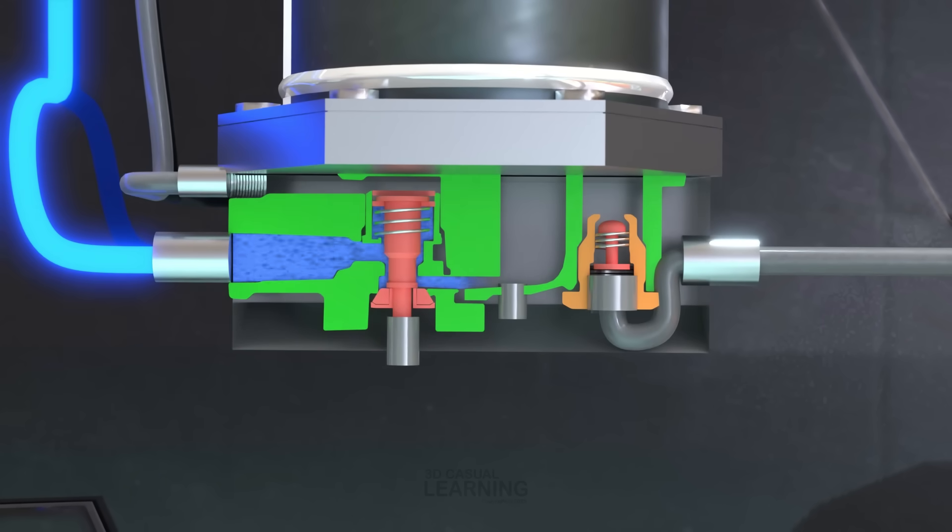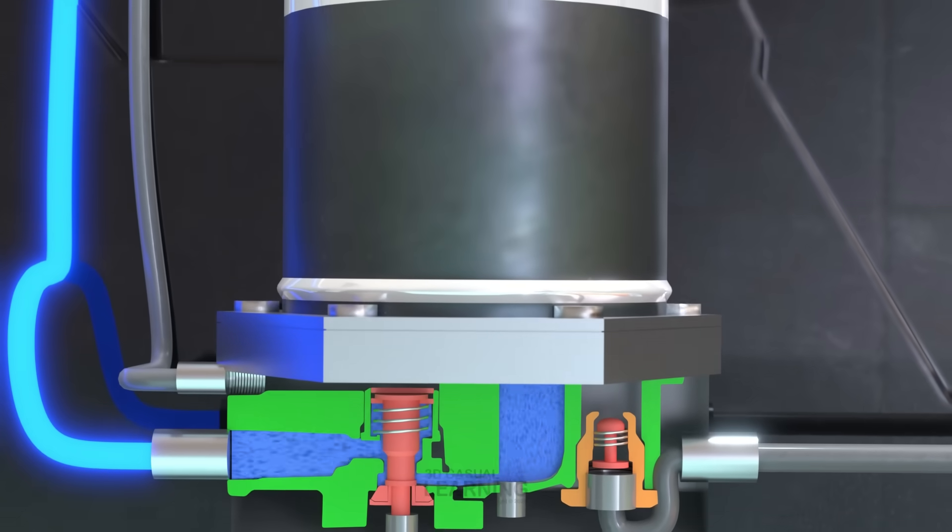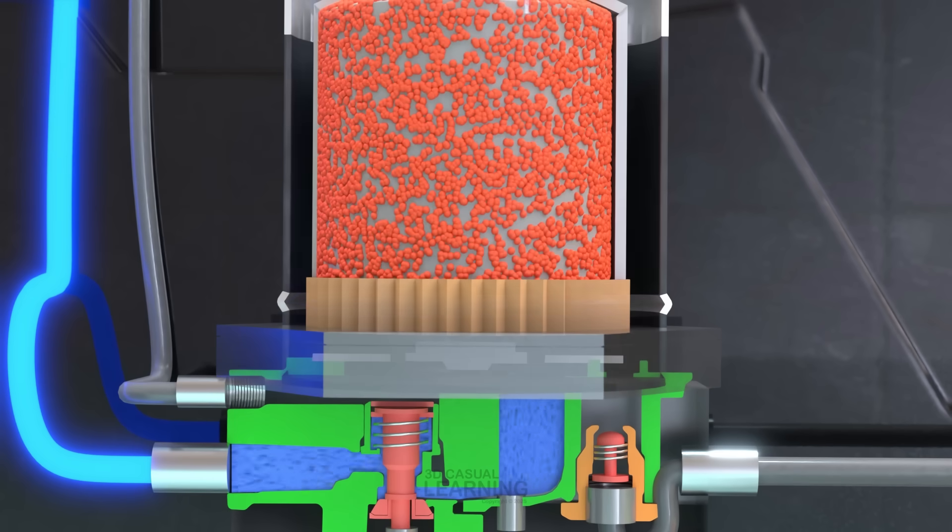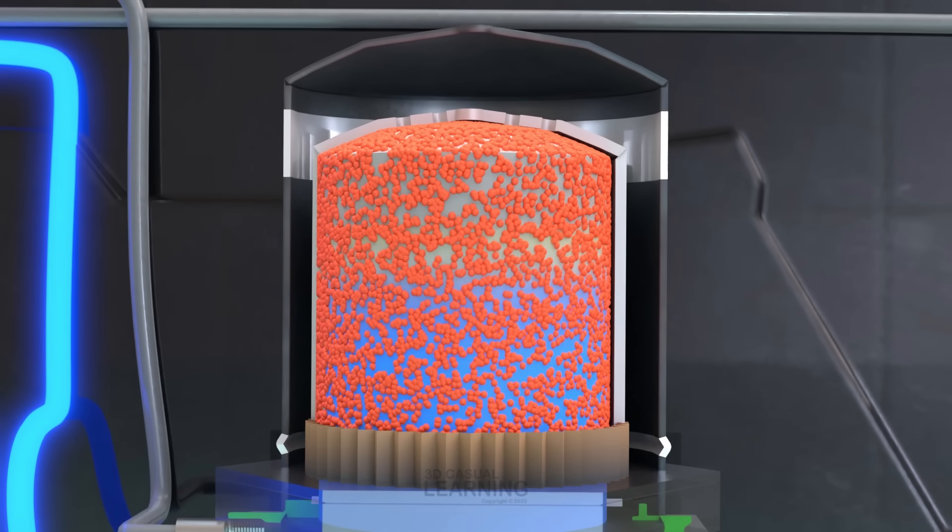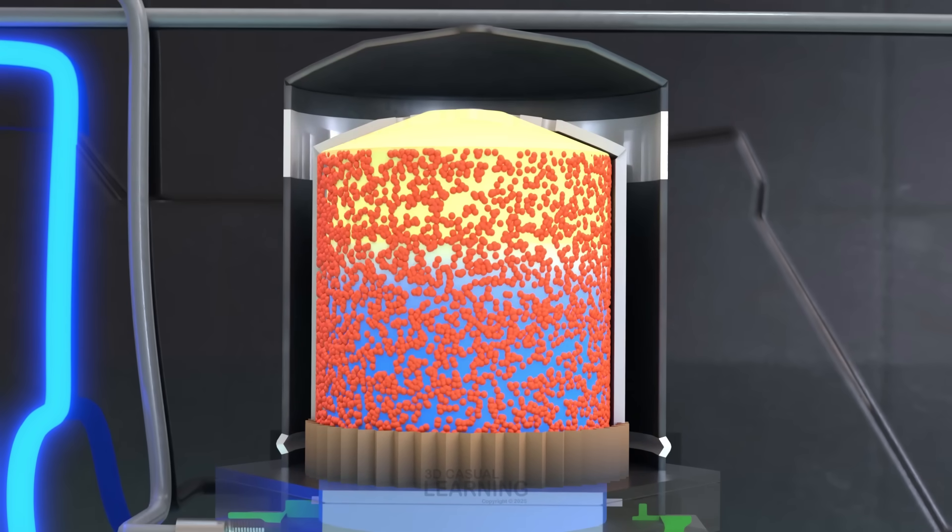During normal operation, known as the charge cycle, compressed air from the compressor enters the supply port located on the air dryer's end cover. As the air flows through the end cover, it begins to cool, causing some contaminants to condense and collect in the end cover sump. The partially cleaned air then enters the oil separator, where additional liquid and solid contaminants are removed. Still saturated with water vapor, the air moves into the desiccant cartridge, passing through the desiccant drying bed. Here, the water vapor is removed through a process called adsorption, where moisture clings to the desiccant material.